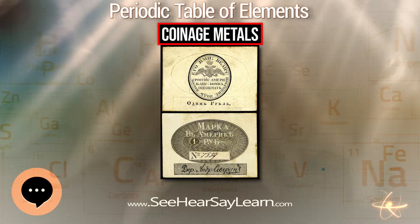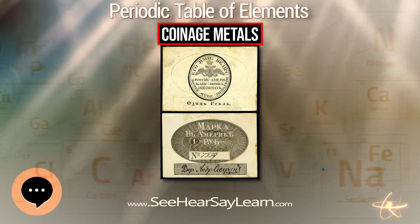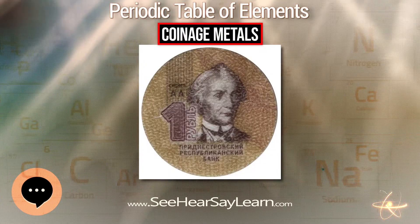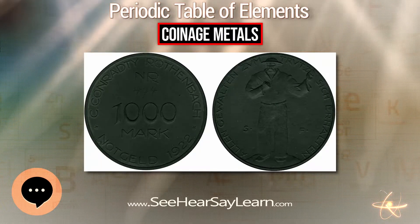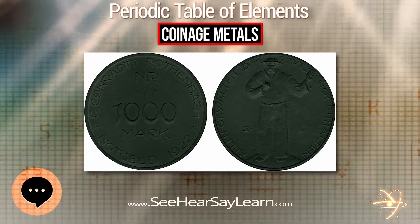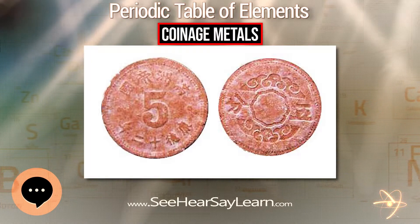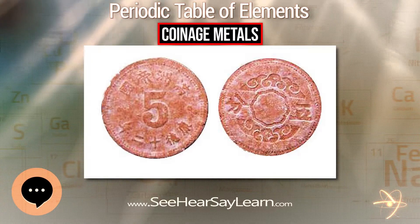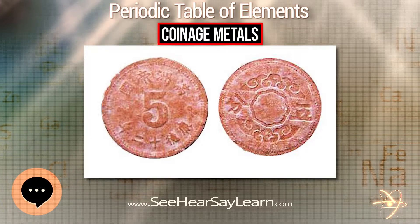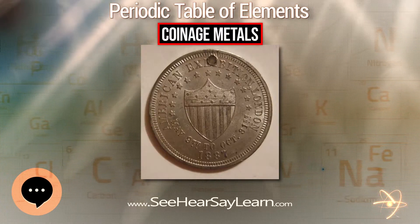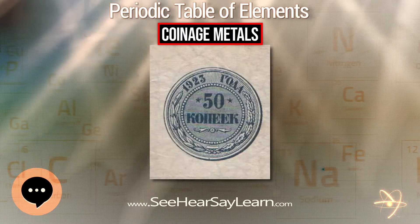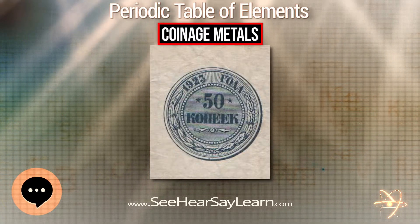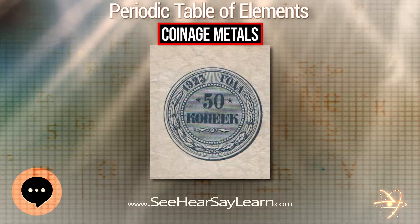World Coin News magazine published an article titled 'World's Coinage Uses 24 Chemical Elements' by Jay and Marie Lee, which appeared in two consecutive issues — February 17th, 1992 and March 2nd, 1992. The article was based on an award-winning exhibit assembled by Jay and Marie Lee Rowe, shown during the 1987–1990 period.